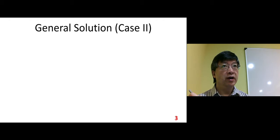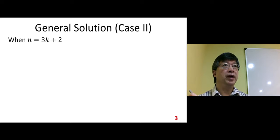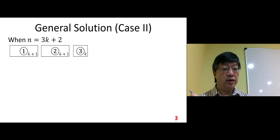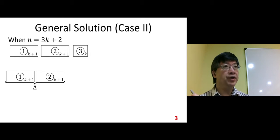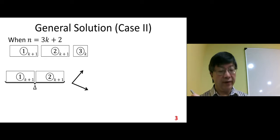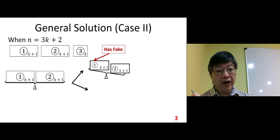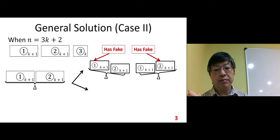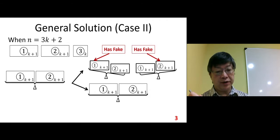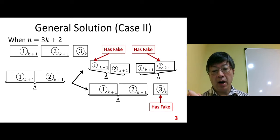Case two for the general solution: n equals 3k plus 2. We distribute the coins as k plus 1, k plus 1, and k. We put pile one and pile two on the scale and divide into two cases: uneven — fake is in pile one or pile two — and even — fake is in pile three.